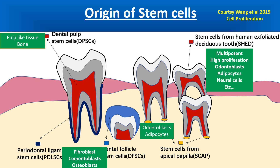These cells in the apical papilla are multipotent and have a high proliferation rate. They will proliferate into odontoblasts, adipocytes, neural cells, and other cell types.